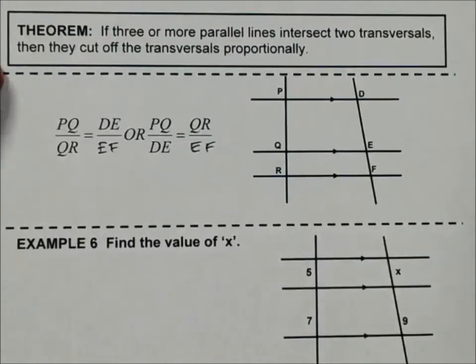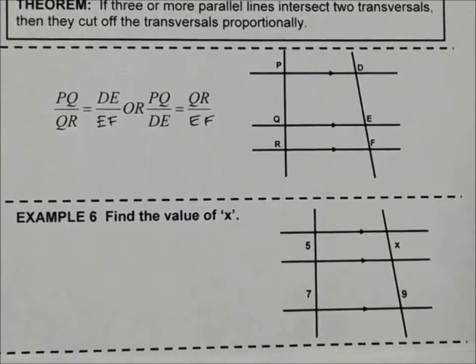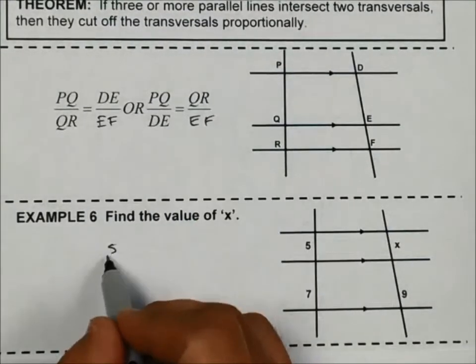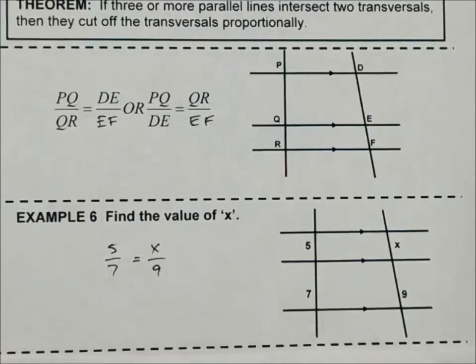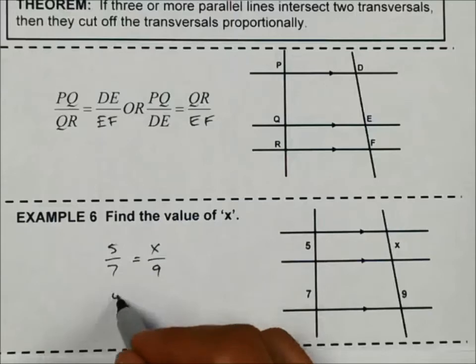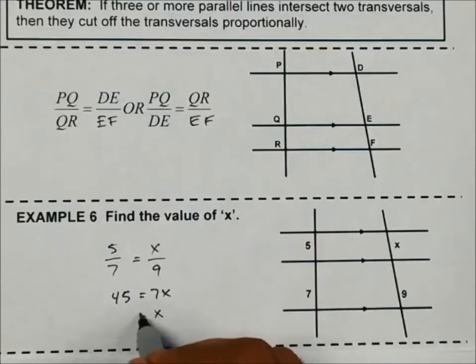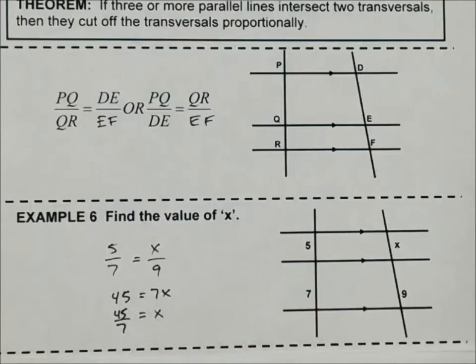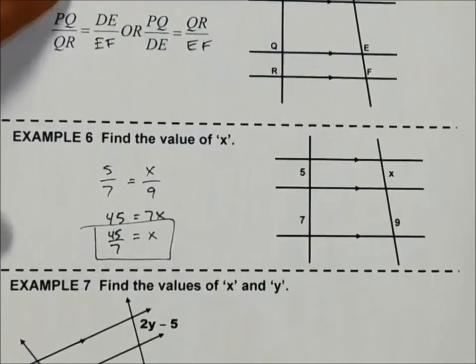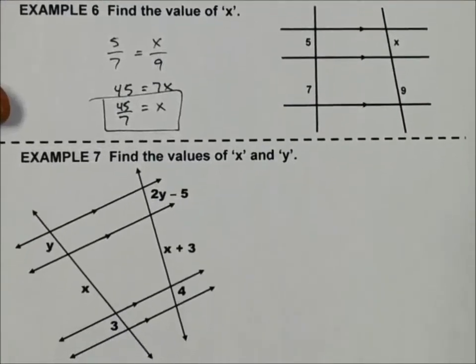Let's see what this looks like. So here's an example. This theorem lets me set this up as 5 over 7 equals X over 9. So 5 times 9 is 45 equals 7X. Divide by 7 is going to give me 45 over 7. Now I put it in the calculator, that's going to give me a decimal that doesn't stop, so I'm just going to leave it as a fraction.